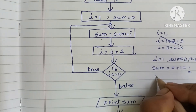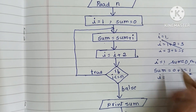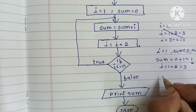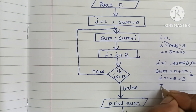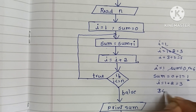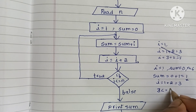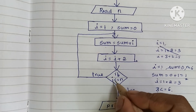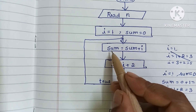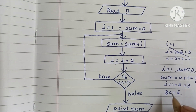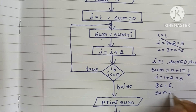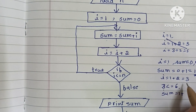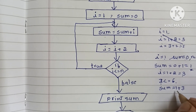Next we increment i: i = 1 + 2 = 3. We check if i is less than or equal to N: i is 3, and 3 is less than or equal to 6, so this condition is true. We go back to the sum process: sum = sum + i = 1 + 3 = 4.